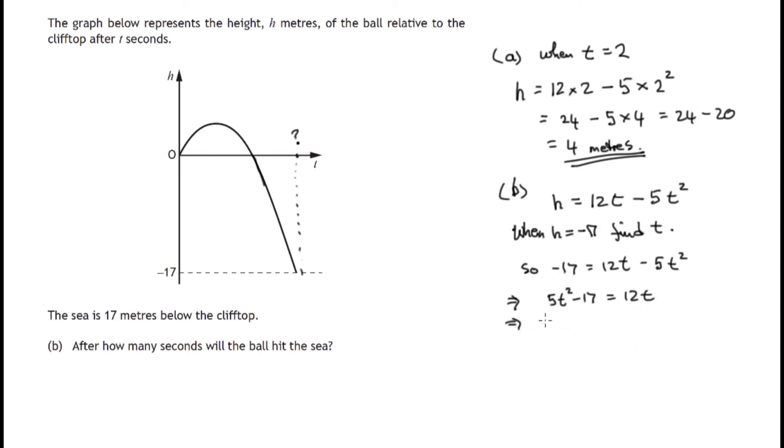And let's subtract 12t from both sides. So on the left I have 5t squared and there's your negative 12t minus 17, and that equals zero.